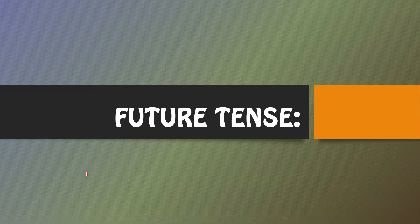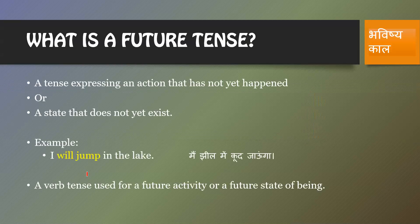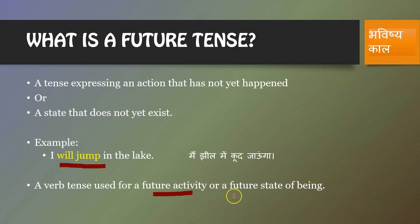Hello everyone, in today's video we are going to learn about future tense. We have seen present tense and past tense. Today we will learn about future tense. Tense means that the future is coming — this is a tense that tells us about an action or a state that has not yet existed. For example, 'I will jump in the lake.' This verb tense is used for future activity or future state of being.